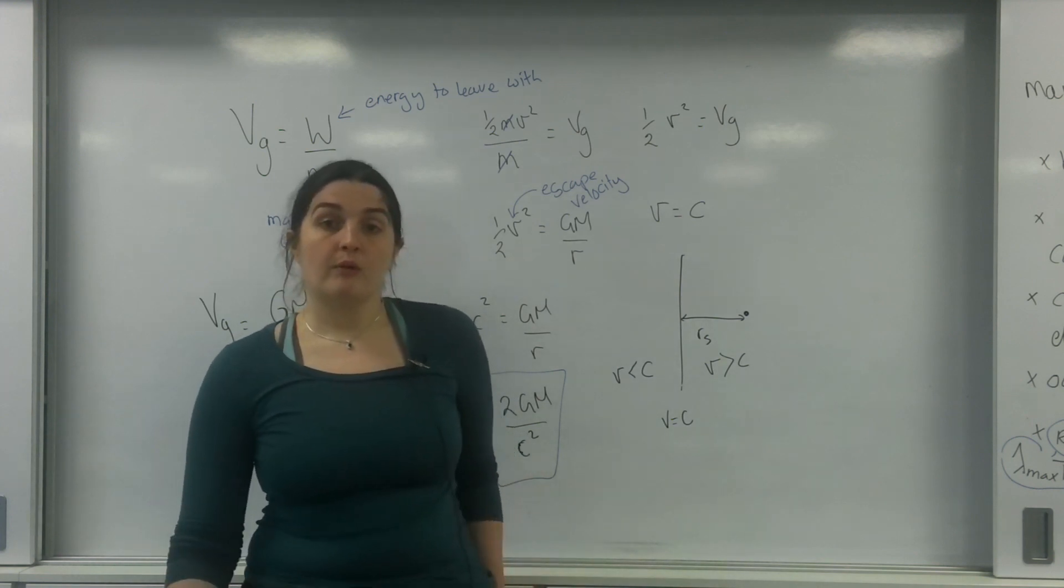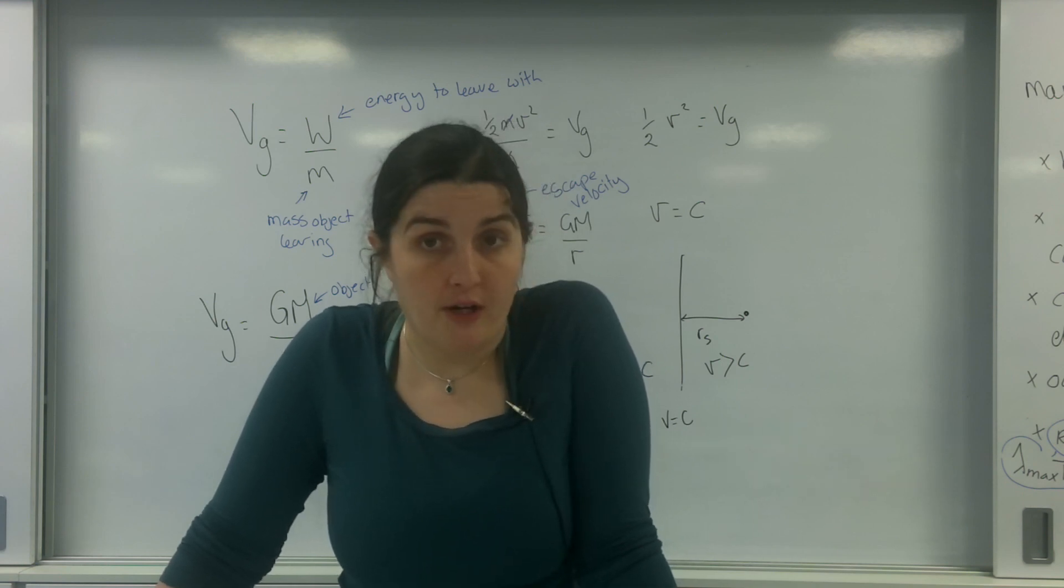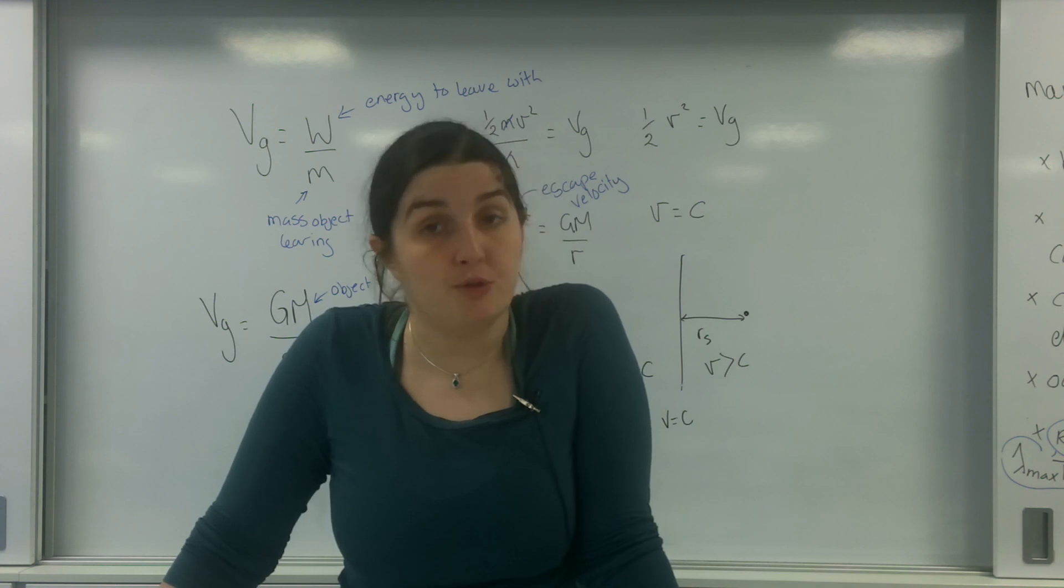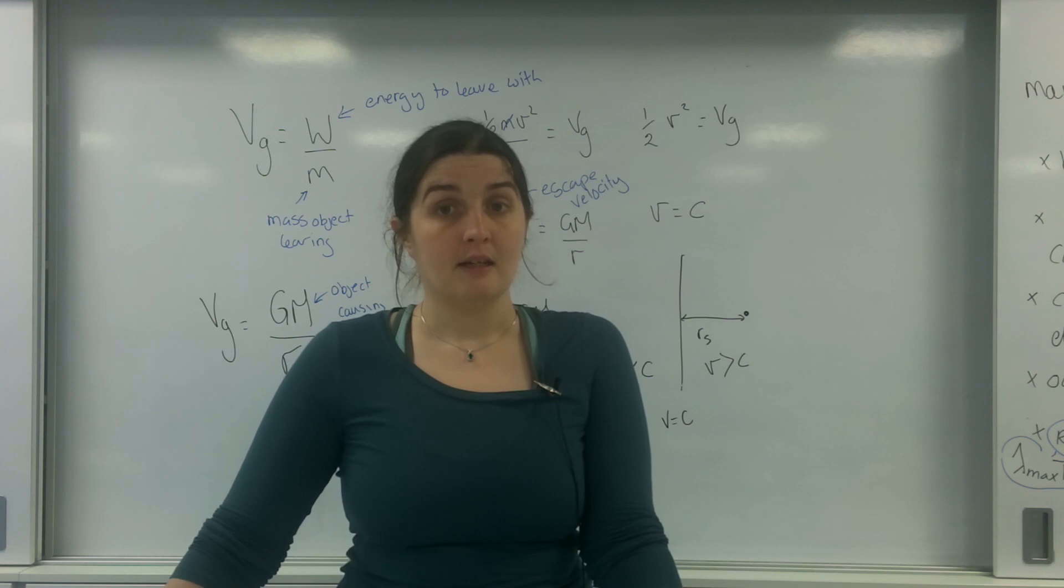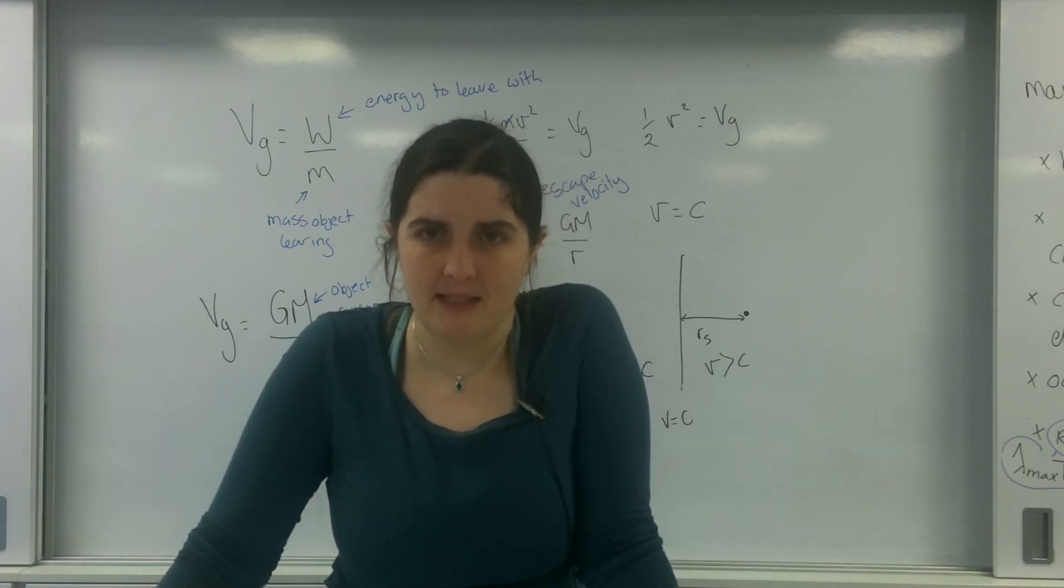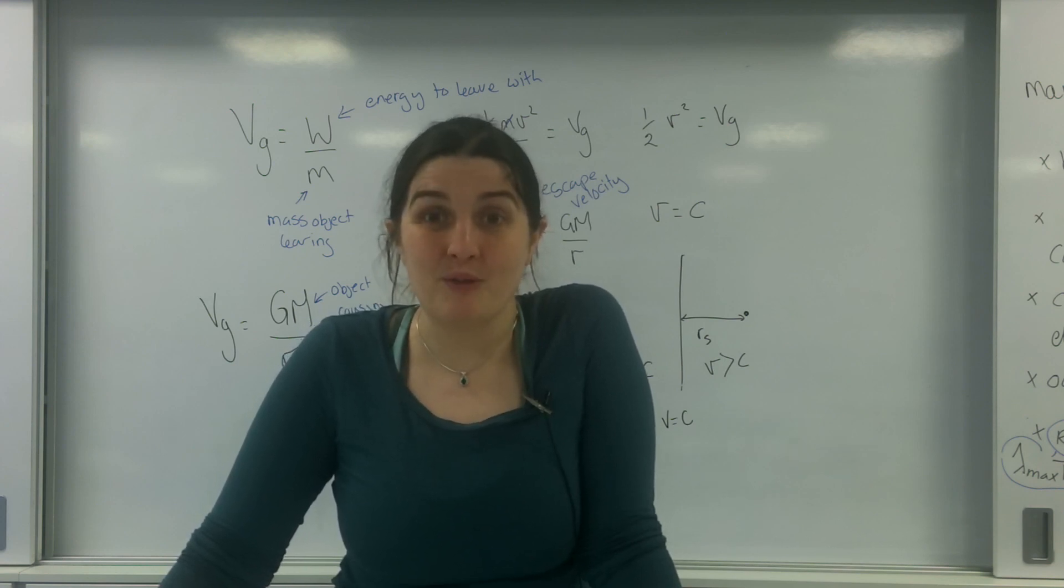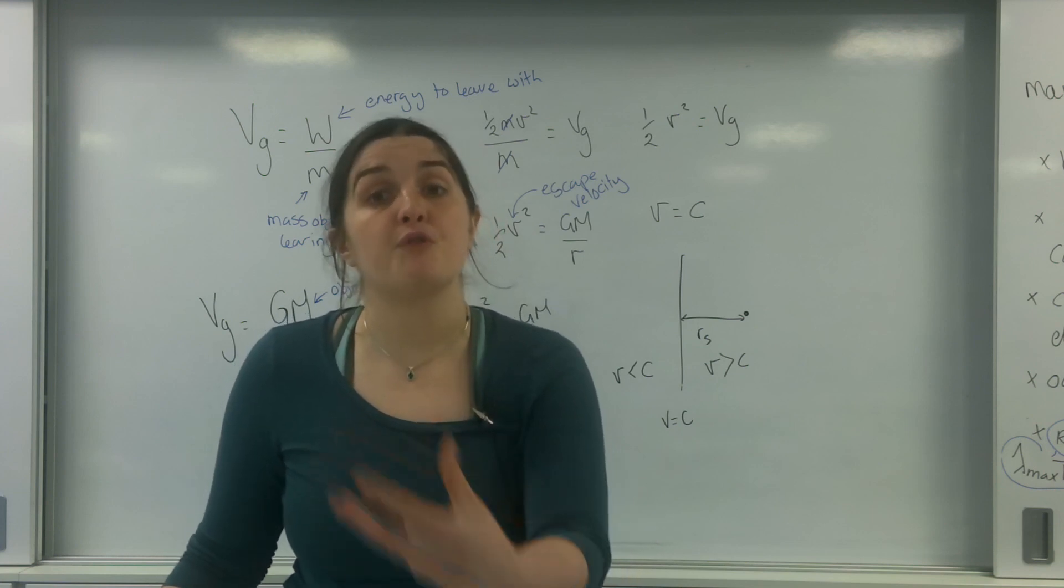So a black hole only forms if the core has shrunk far enough to actually meet the Schwarzschild radius. If it hasn't shrunk far enough to be a Schwarzschild radius, it would probably be a neutron star. This three solar masses that is touted as the limit is because the core being three solar masses means that it has enough gravitational force to contract enough to meet its own Schwarzschild radius.